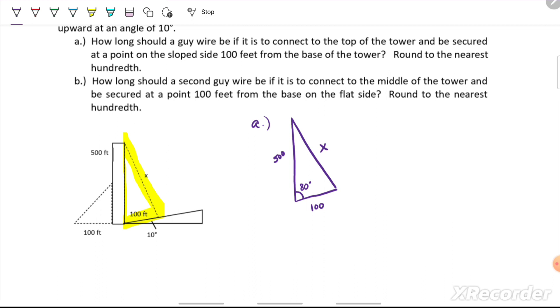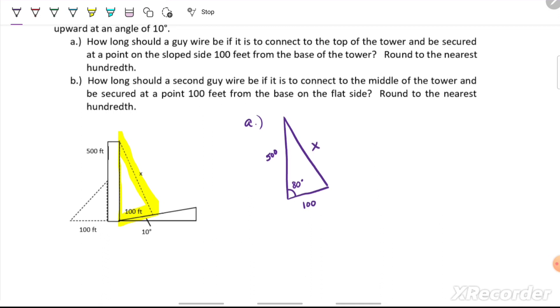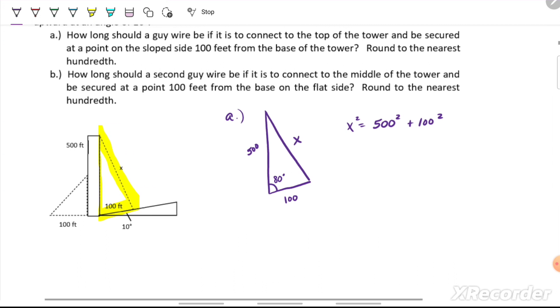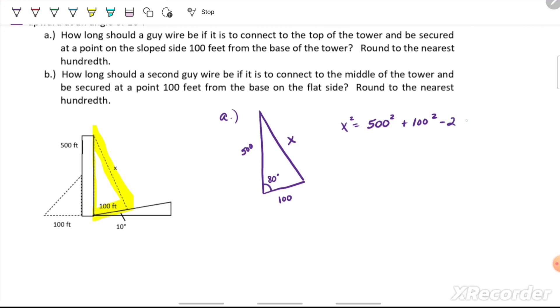I know that law of sines is not applicable because I don't have a known pair, so we're going to use law of cosines. We always start with the side across from the angle that's known or the one we're looking for. So we're going to have x squared equals 500 squared plus 100 squared minus 2 times 500 times 100 times cosine of 80 degrees.